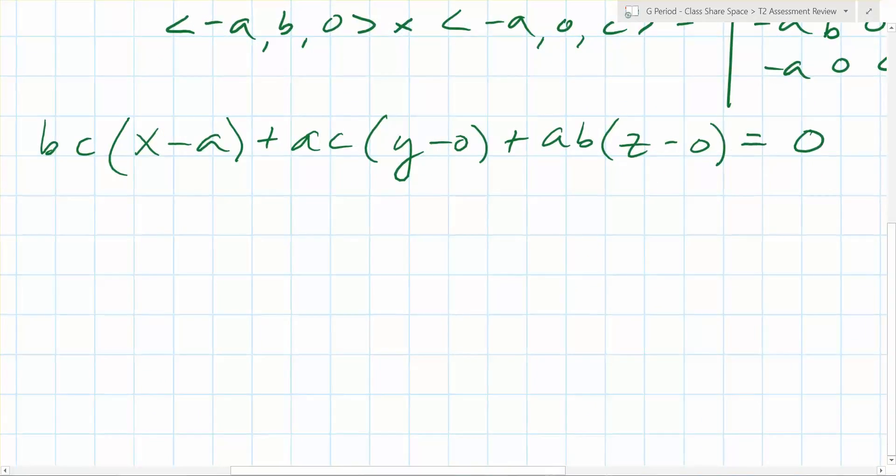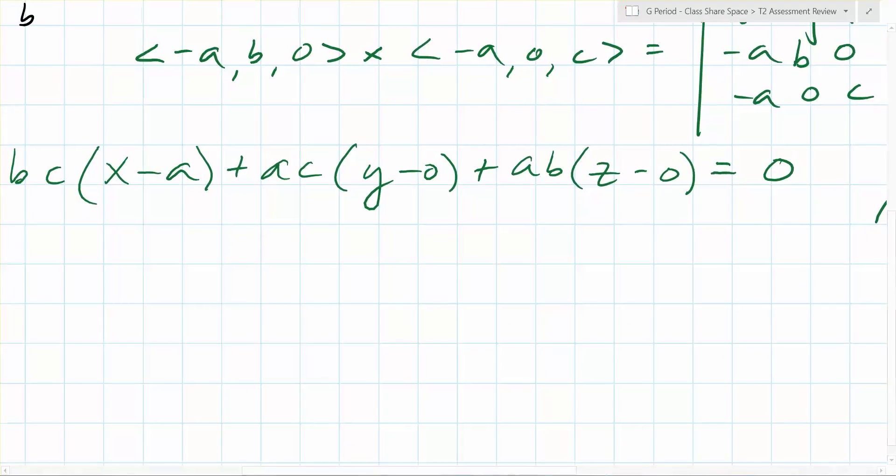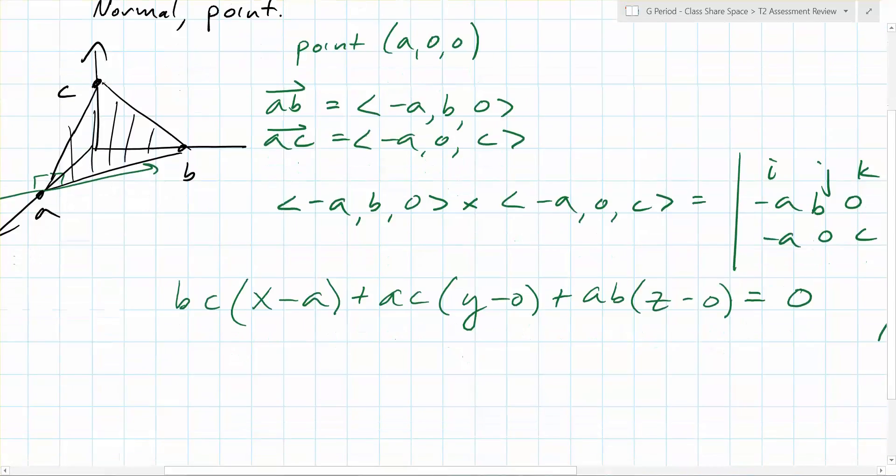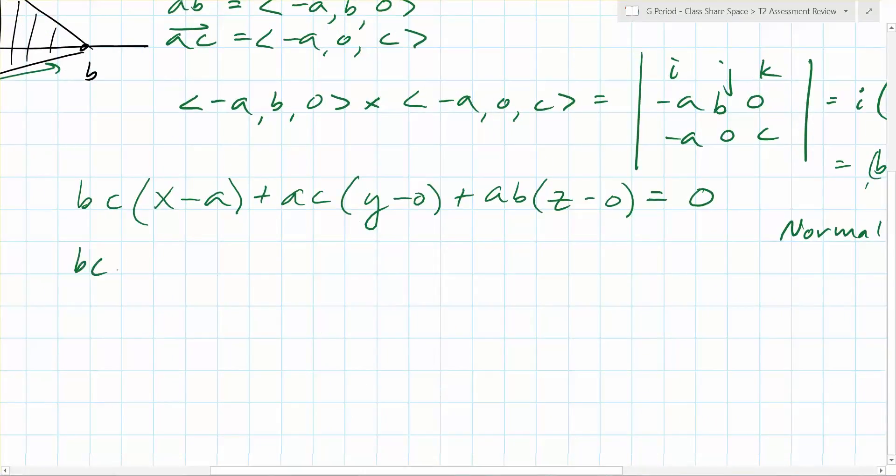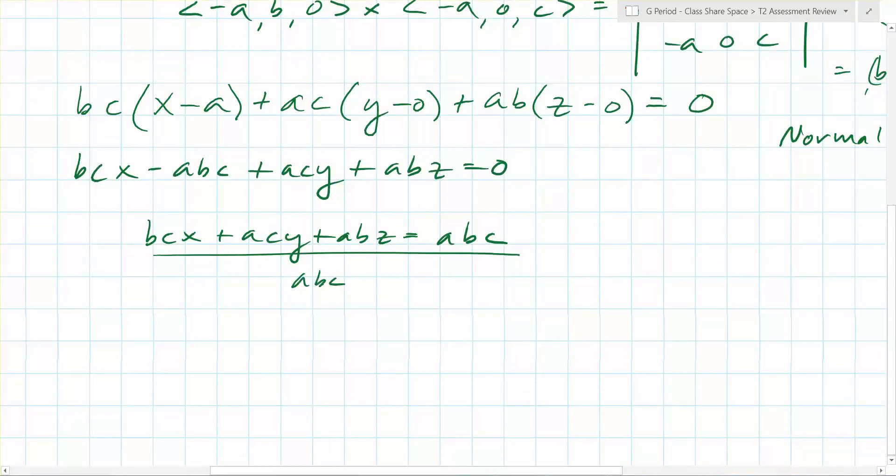So what do we have to do to this equation now? We're trying to make it fit into this equation: x/a + y/b + z/c = 1, right? So we have to expand it. So we end up with bcx - abc + acy + abz equals 0. So bcx + acy + abz equals abc. If you divide by abc, you end up with x/a + y/b + z/c equals 1. There it is.